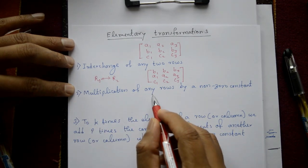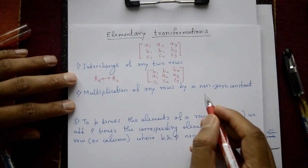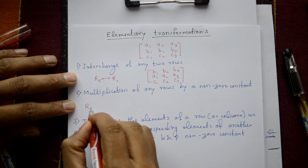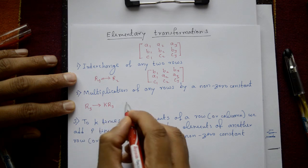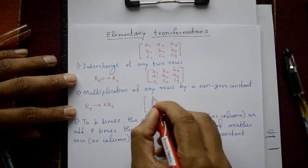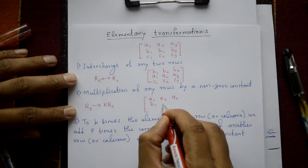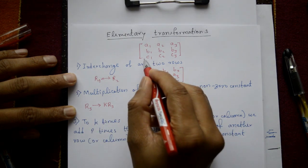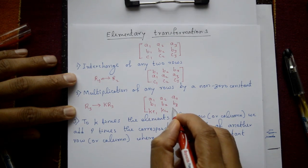The second elementary transformation is multiplication of any row by a non-zero constant. For example, R3 equals k times R3 — multiply the third row only by a non-zero constant. The matrix becomes: first two rows unchanged — a1 a2 a3, b1 b2 b3 — and R3 becomes k·c1, k·c2, k·c3.